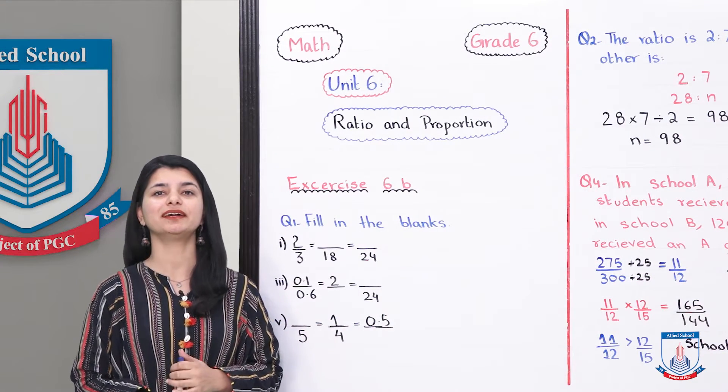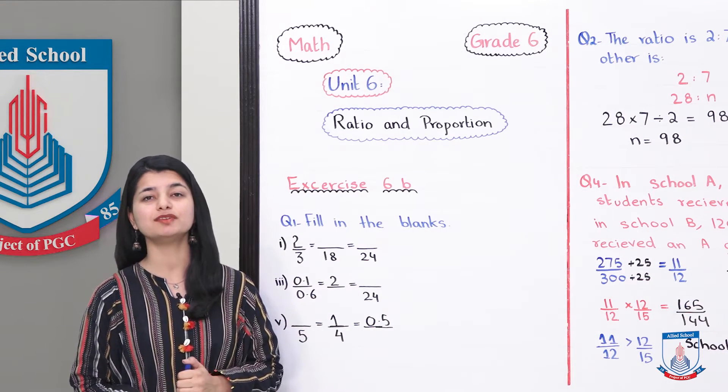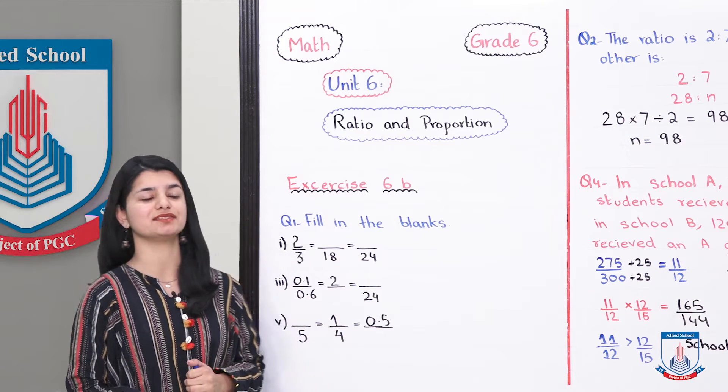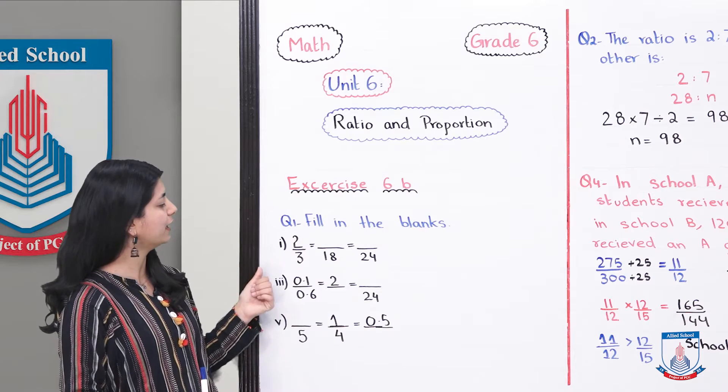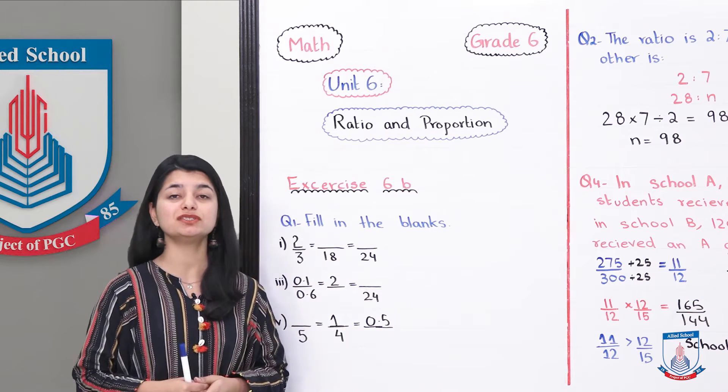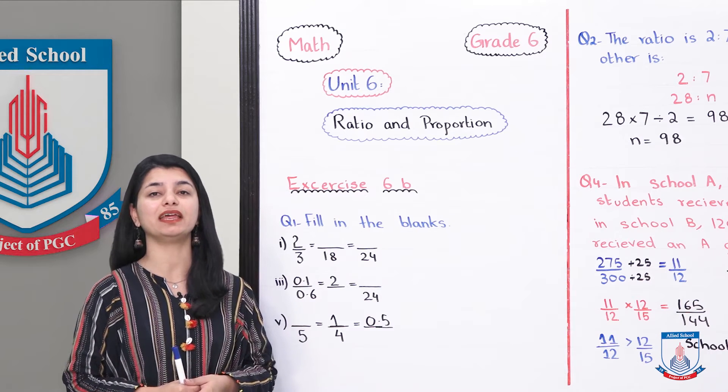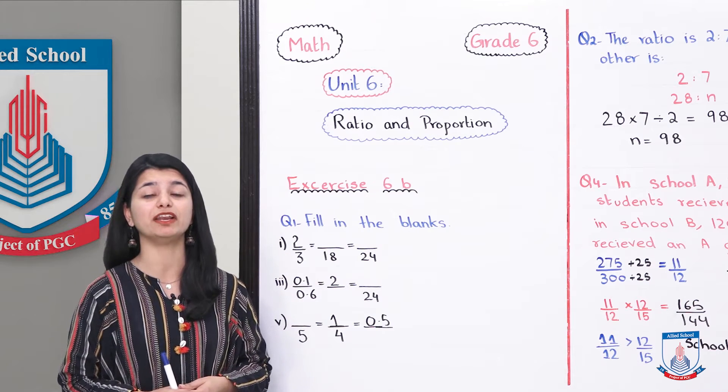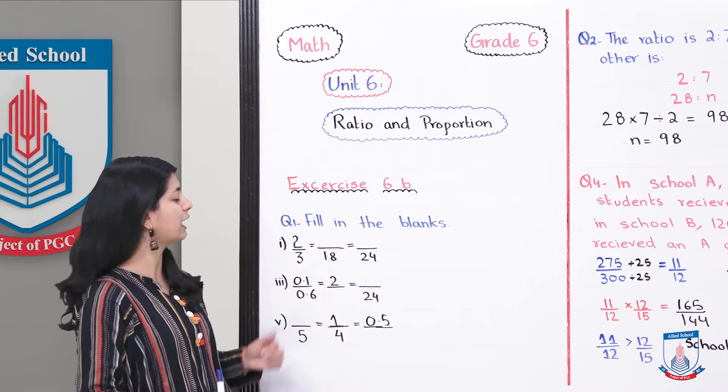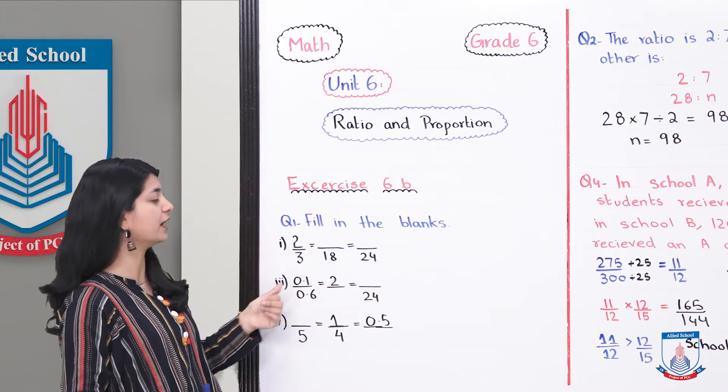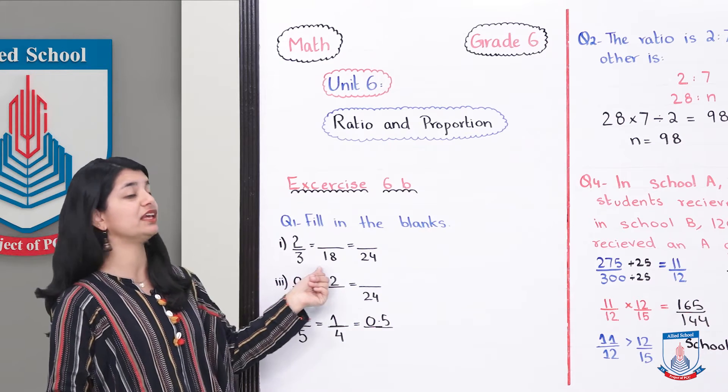We have started exercise 6B. The first question is about fill in the blanks. Let's see what it demands. Now we need to make different fractions equivalent. You have to make them the same by using the numbers that are being divided or multiplied. In the first quarter, you are saying that 2 by 3 is equal to something over 18.